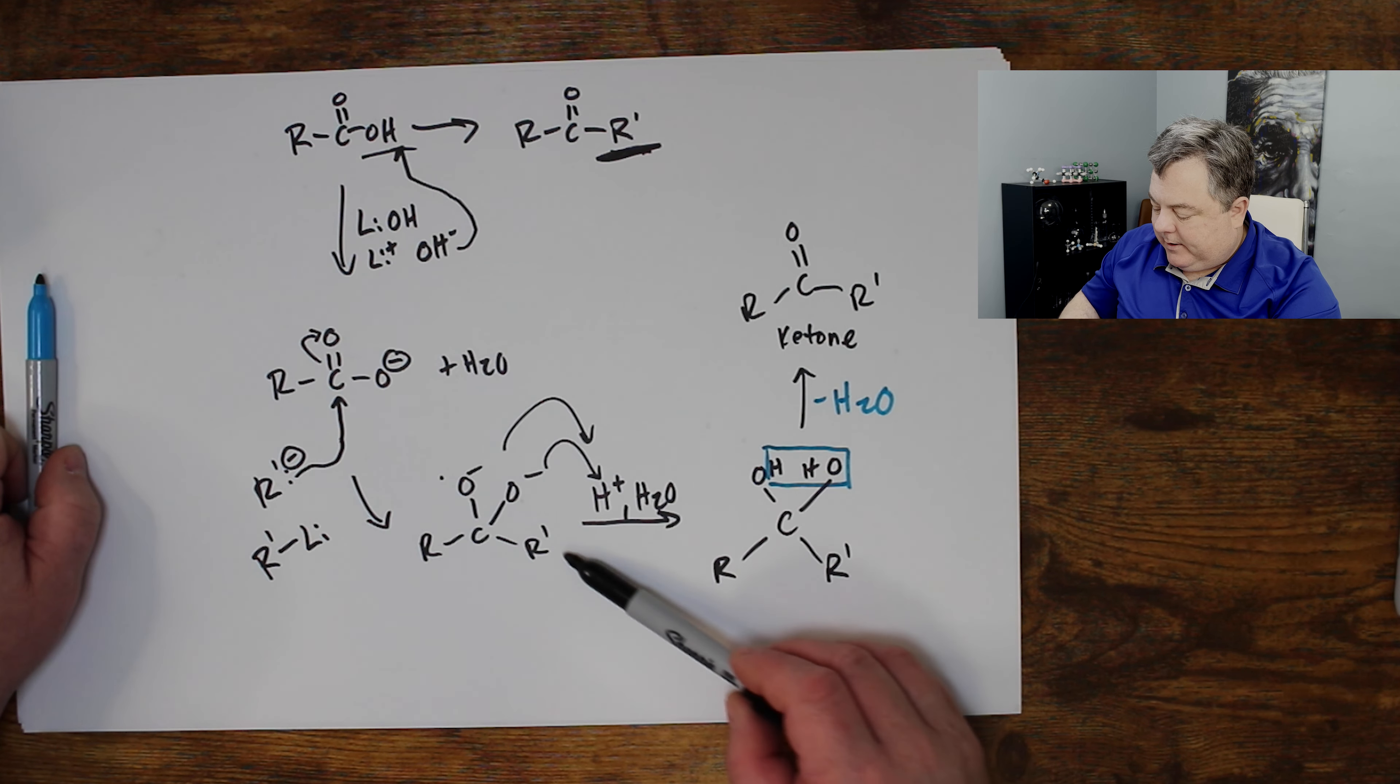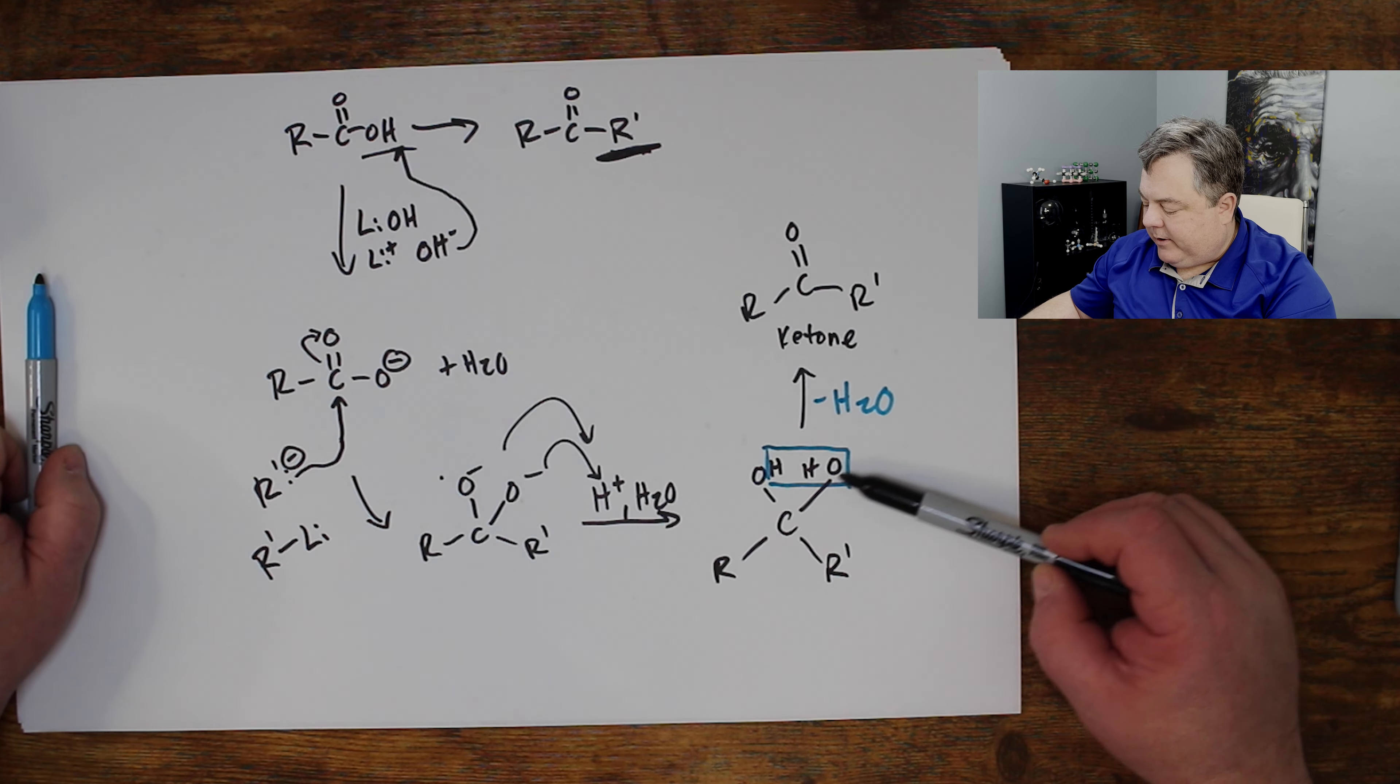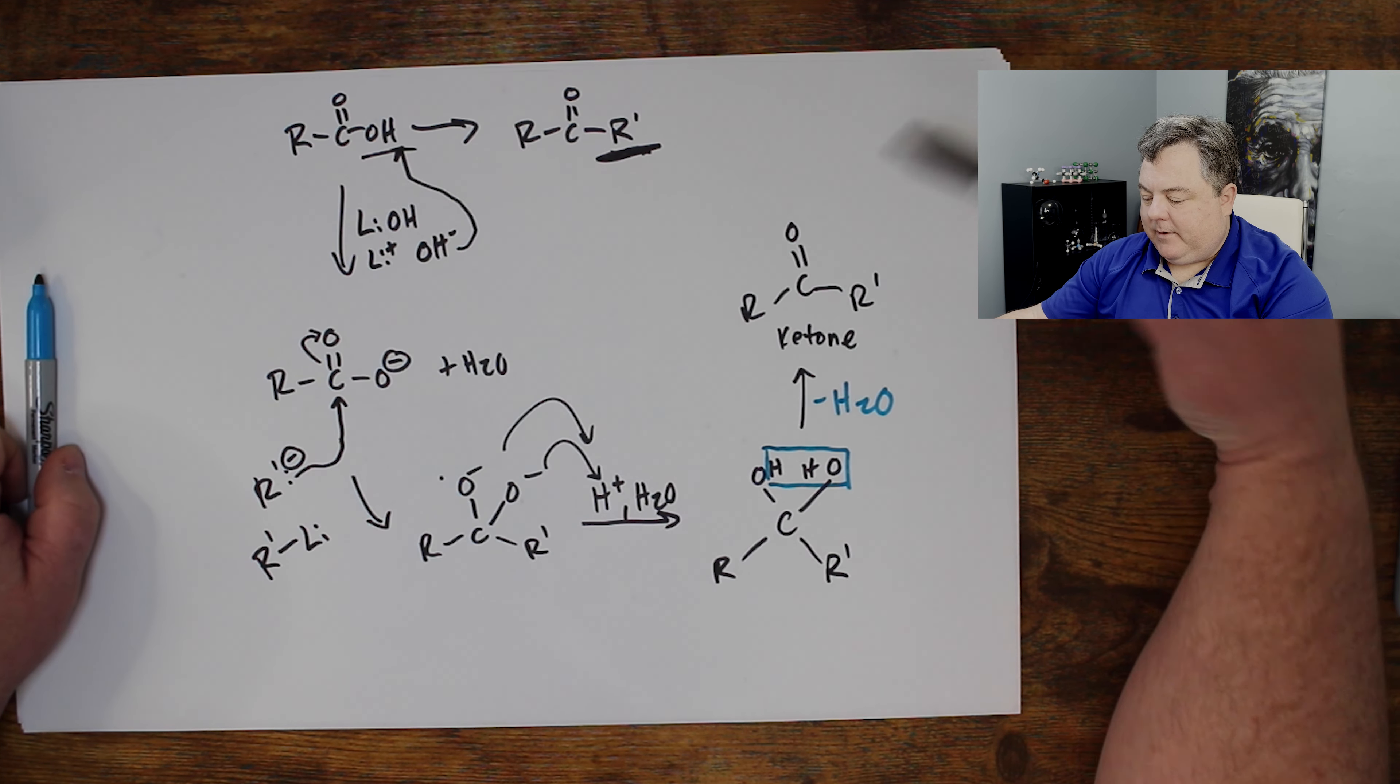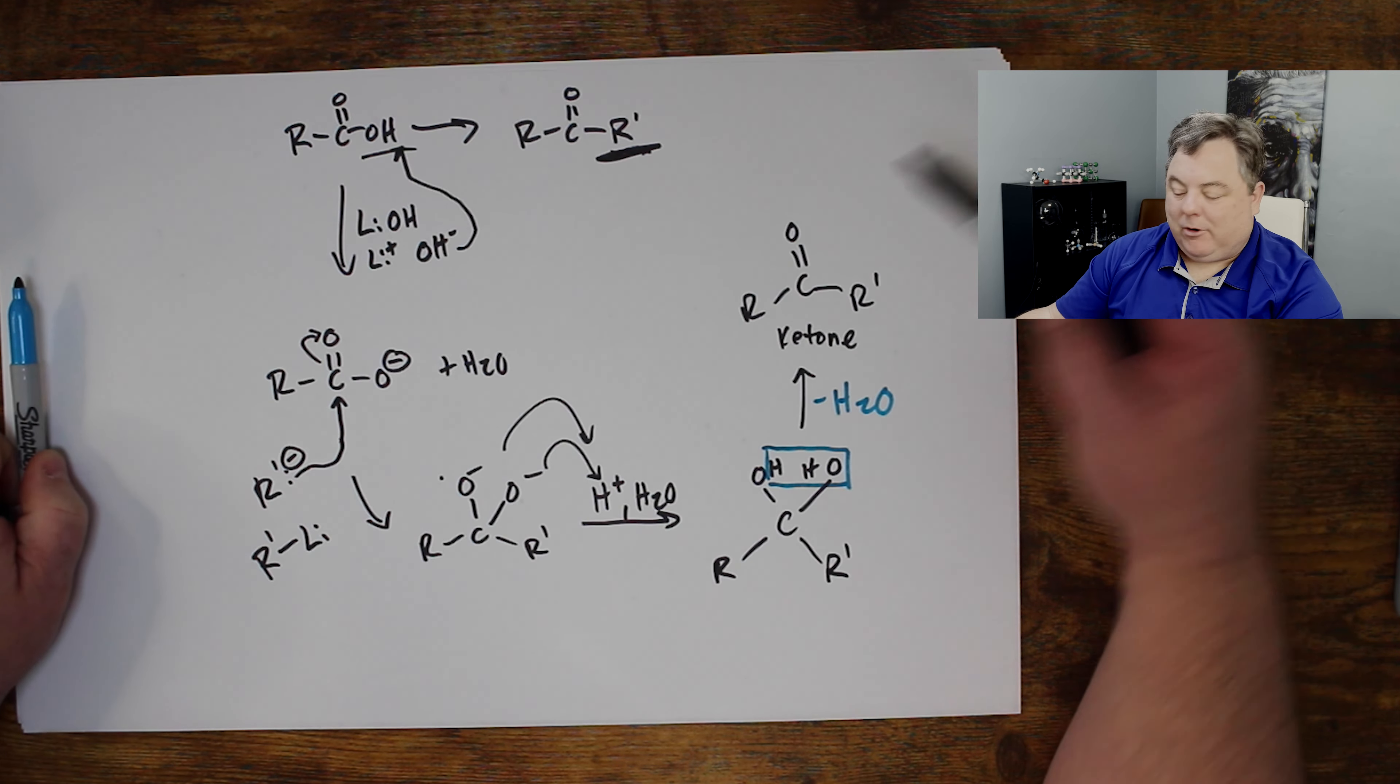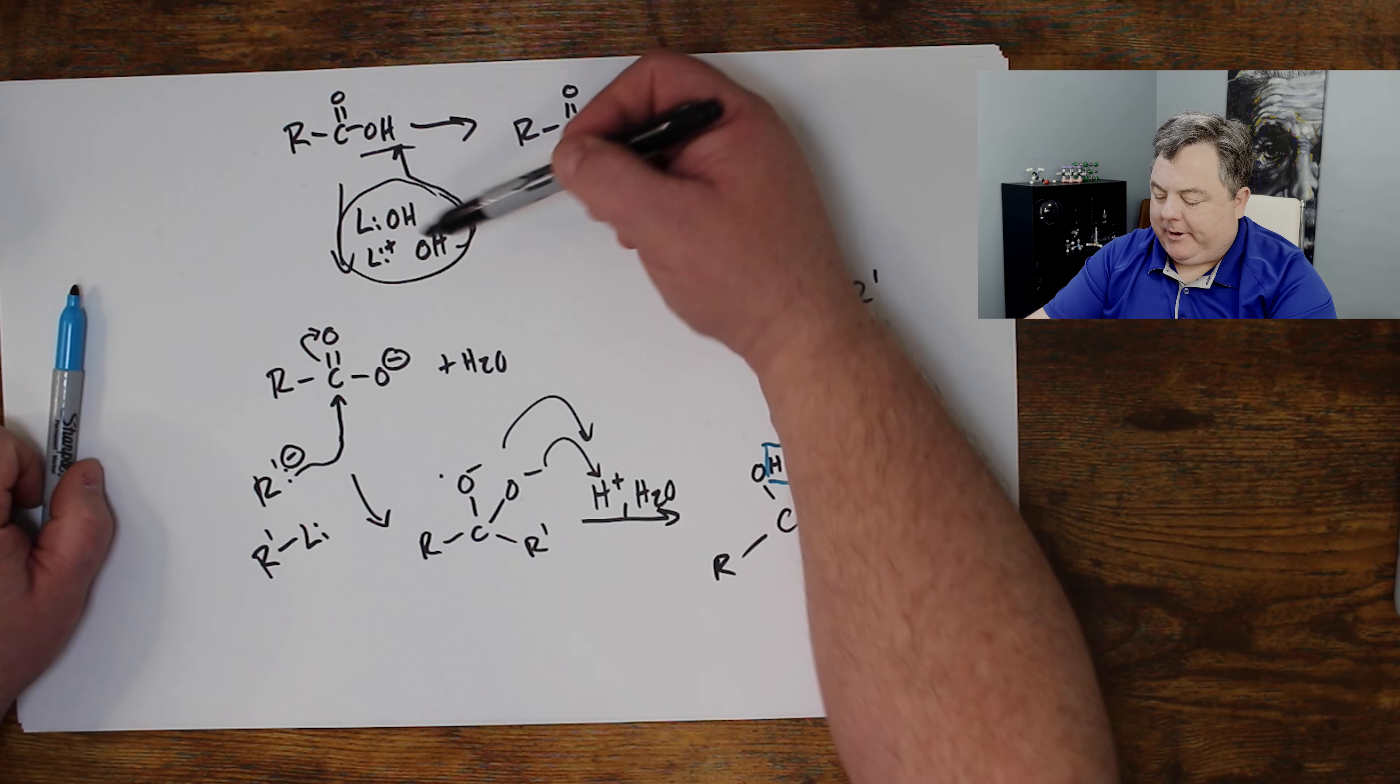So that's how I can take a carboxylic acid, remove its proton, attack with whatever organolithium you want. You get the two O minuses, which become two alcohols when you quench it. Water falls off and it makes my ketone. Not too difficult.